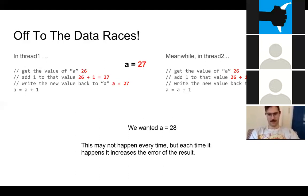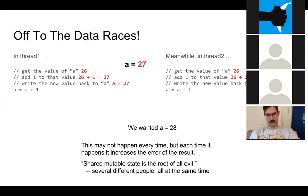This may not happen every time, but each time it happens we increase the size of our error. And in most cases there's no 'size of error' — you're either getting the right value or you're not. Shared mutable state is the root of all evil, as a number of different people have said in the past.